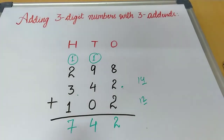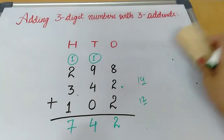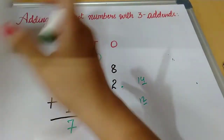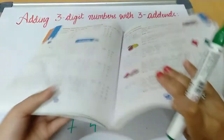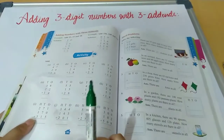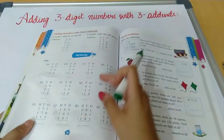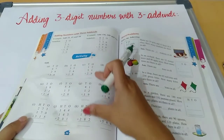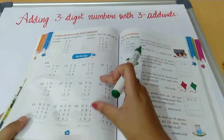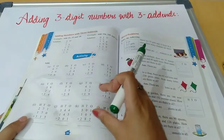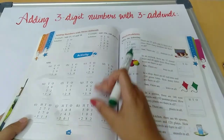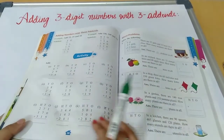Now in your textbook on page number 36, the two-addend problems we have done already, so you will do those with carry. And the three-addend problems we have done — you will do those as well.